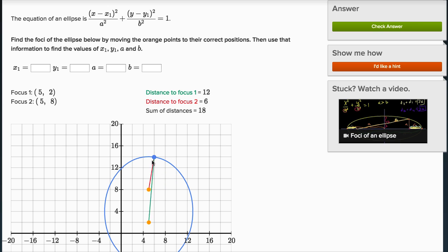Now you can see they're clearly not in the correct position right over here because up here, when I was moving it around, you see that the distance to focus 1 from this point on the ellipse is 11.7. That's the green line. The distance to focus 2 is 6. You add them together is 17.8. But when you move it around, that changes.